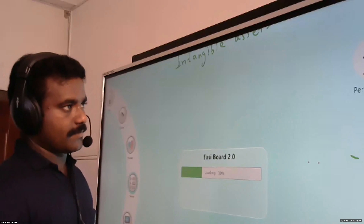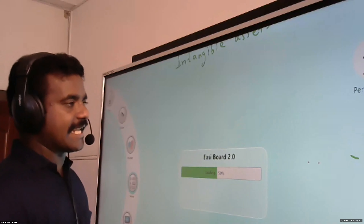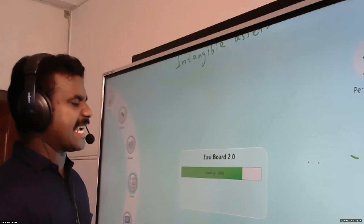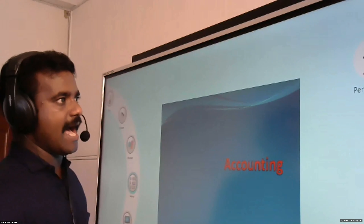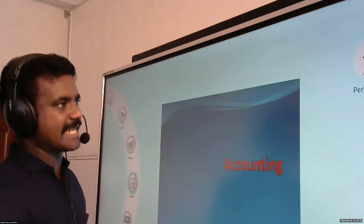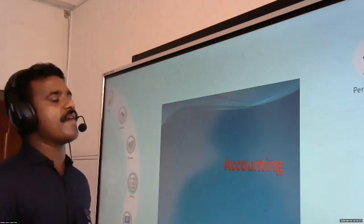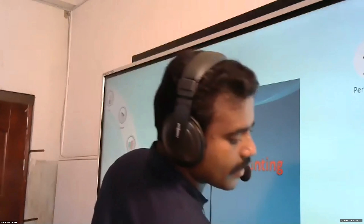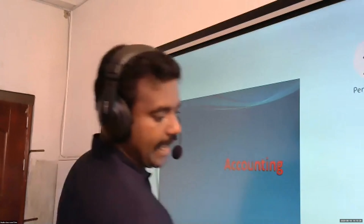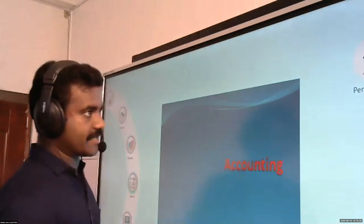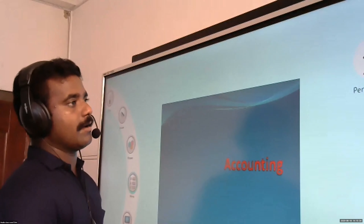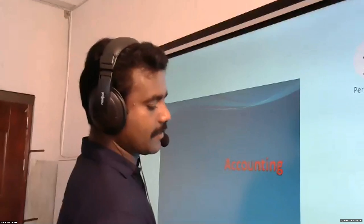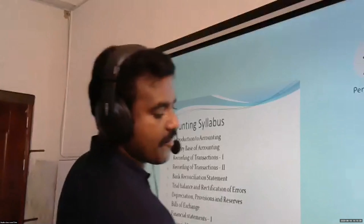Next is wasting assets. Assets which get exhausted due to the extent of extraction are known as wasting assets. Examples: mines, quarries, oil fields. If you extract from them, the amount of assets will decrease.